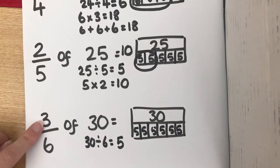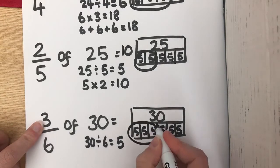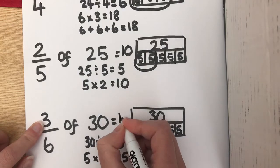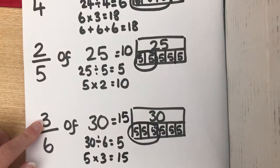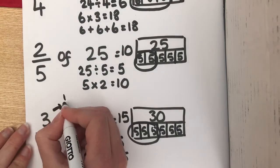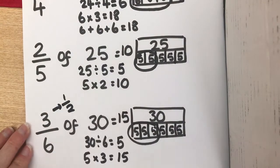And we didn't want 1 sixth though, we wanted 3. So, we are going to multiply our 5 three times. We should get 15. And hopefully, some of you should have spotted that 3 sixths is equivalent to a half. And a half of 30 is 15.